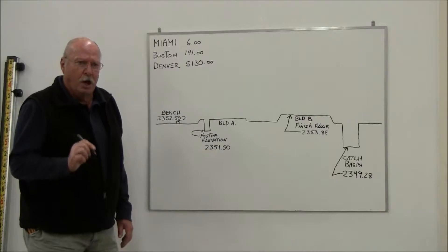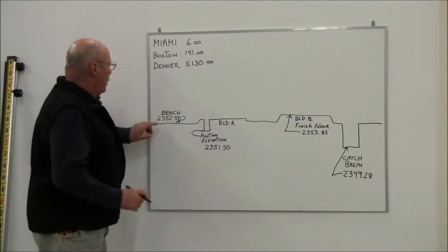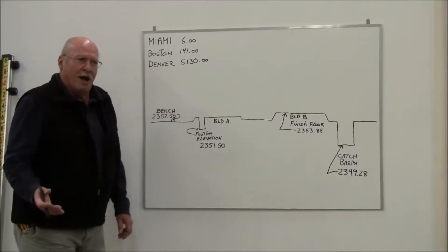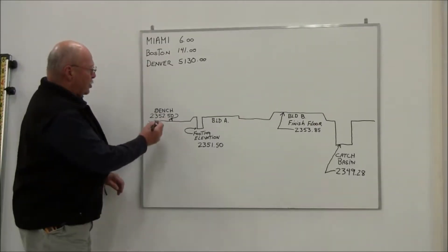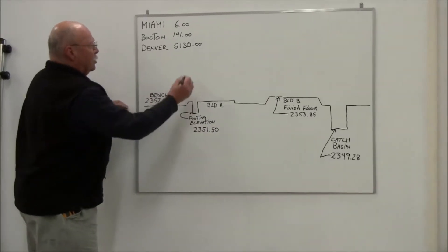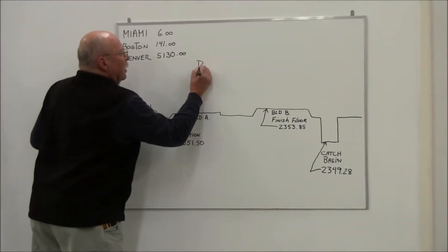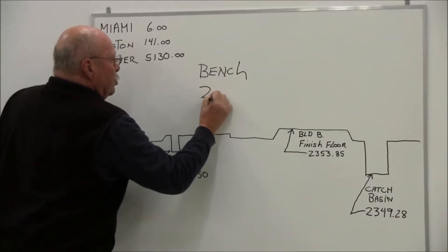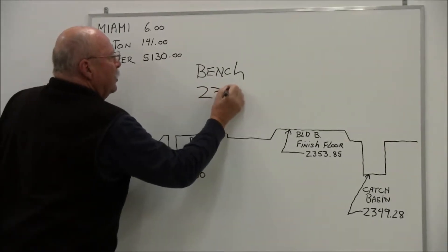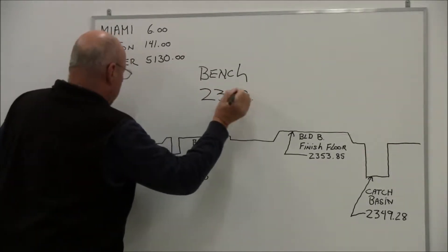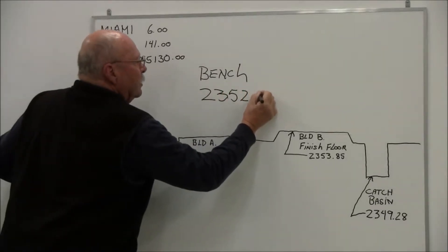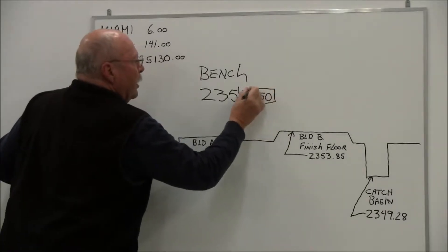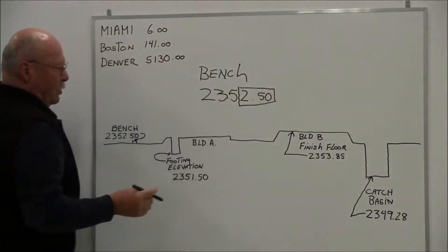So for purposes of conversation today, we're going to say that our benchmark elevation on this job is 2,352.50. Well, the grade rod is obviously not 2,000 feet high, so what we're going to use is the whole number and the last two digits. So I've got a bench on this job of 2,352 feet and 50 hundredths.